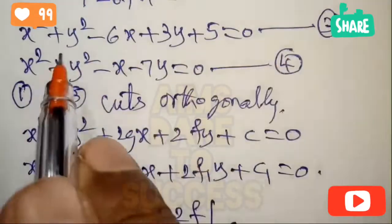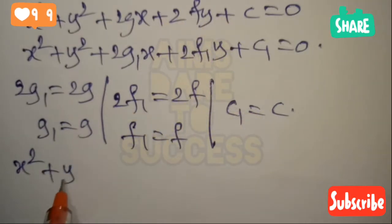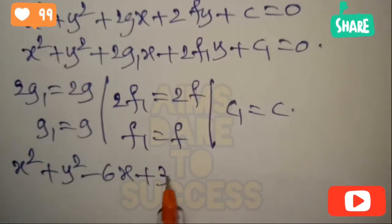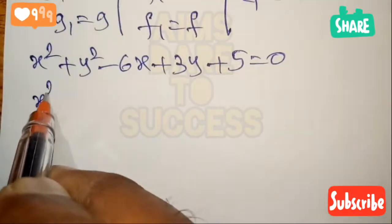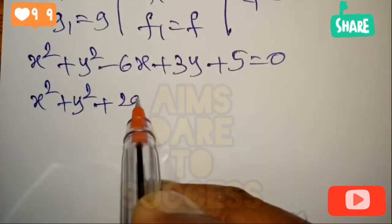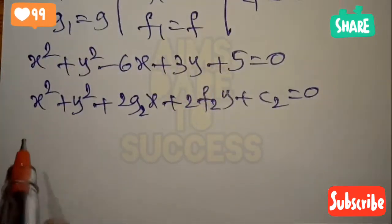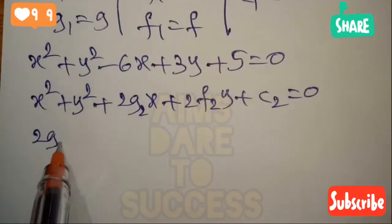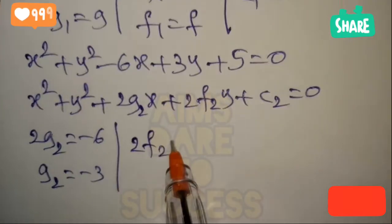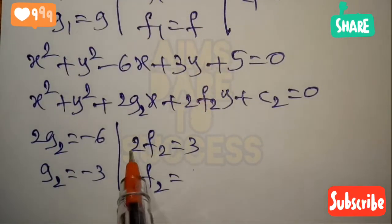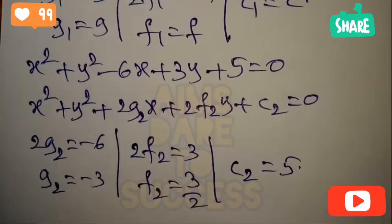Now comparing equation 3, x² + y² - 6x + 3y + 5 = 0, with x² + y² + 2g₂x + 2f₂y + c₂ = 0. Comparing x-coefficients: 2g₂ = -6, so g₂ = -3. Comparing y-coefficients: 2f₂ = 3, so f₂ = 3/2. Constant term: c₂ = 5.